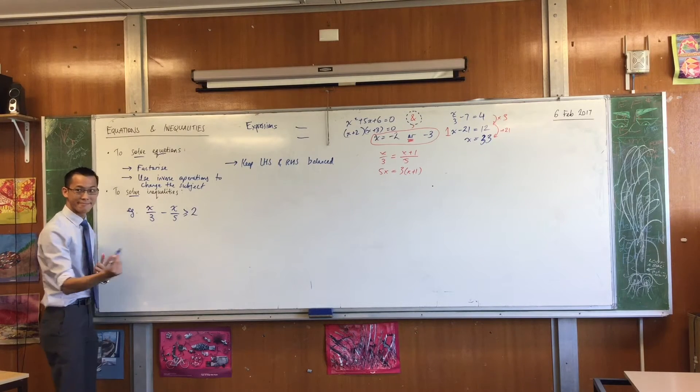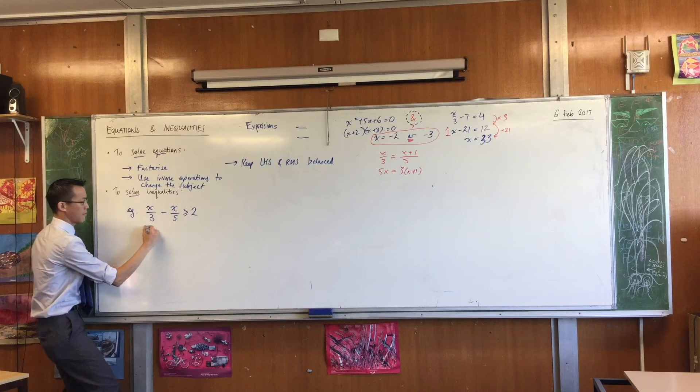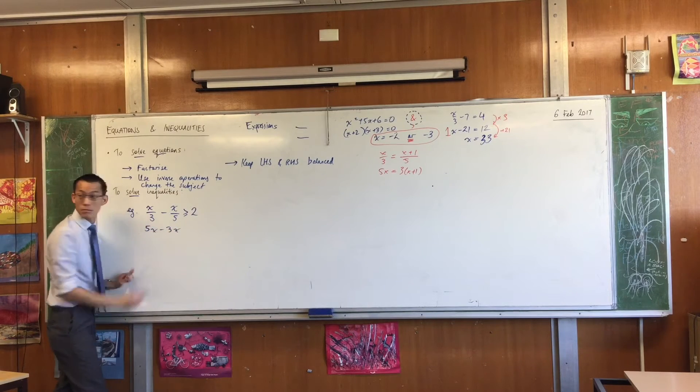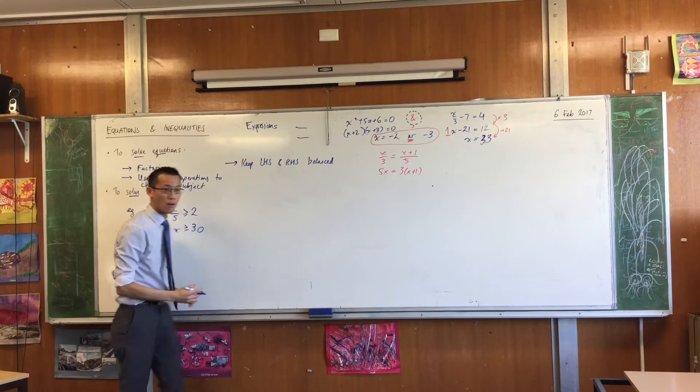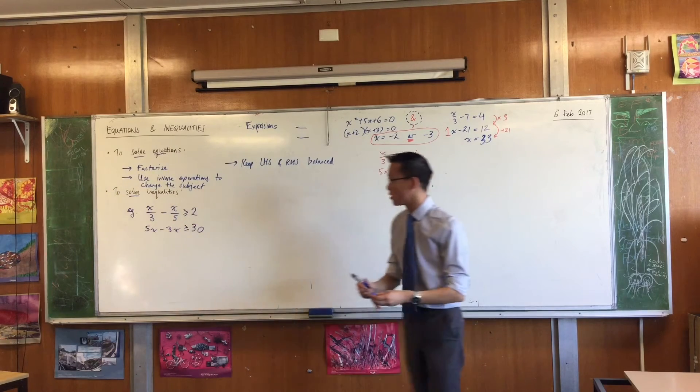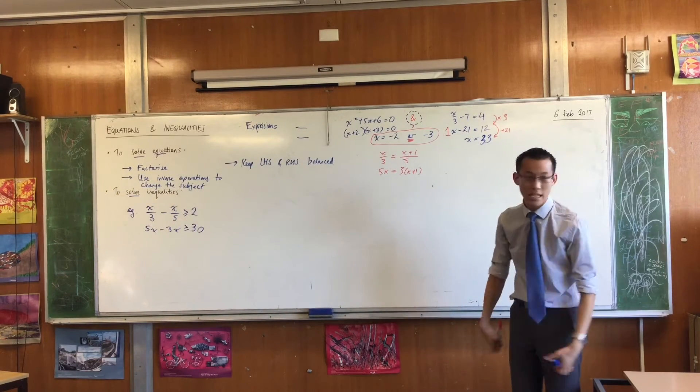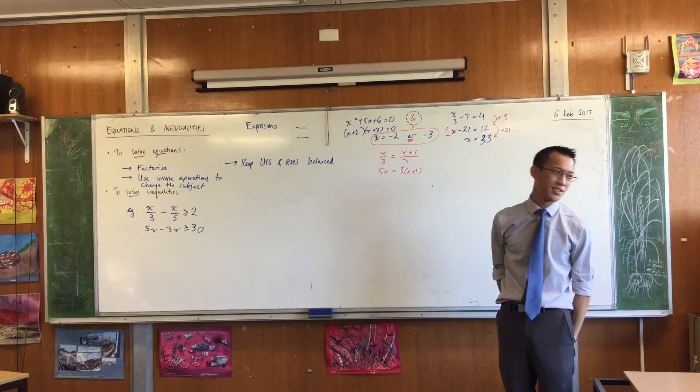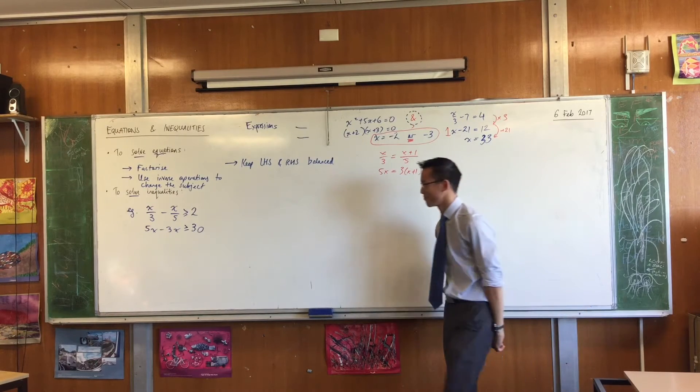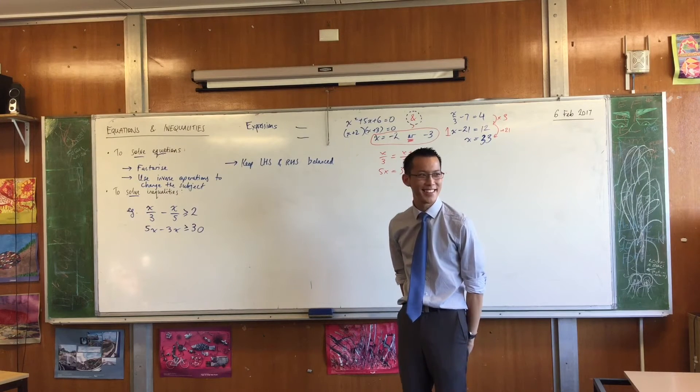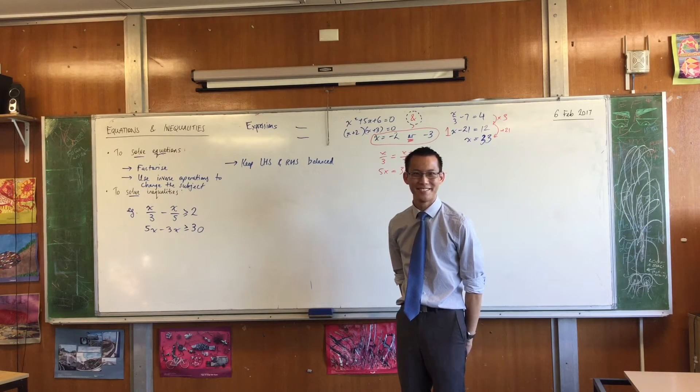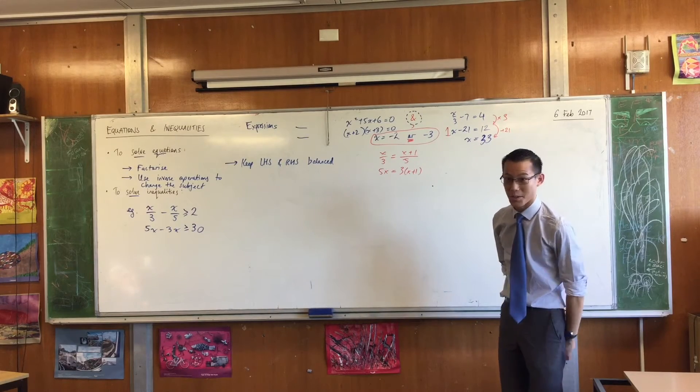So tell me what should I write? 5x take away 3x. Cool. All right, so Sharon's got us from line 1 to line 2. Someone to take over from line 2 to line 3. This is an easy one. Even if you're not awake yet, you could probably have a go at this one.